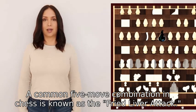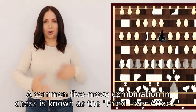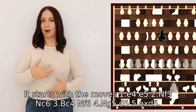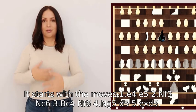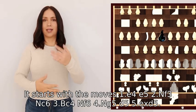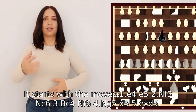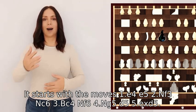A common five-move combination in chess is known as the Fried Liver Attack. It starts with the moves 1.e4 e5 2.Nf3 Nc6 3.Bc4 Nf6 4.Ng5 d5.